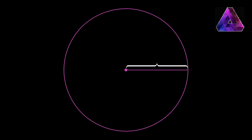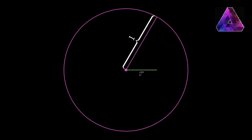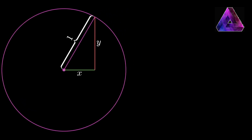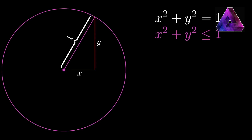So now let's back up again and think about this from a math perspective. Inside that circle, we have the relationship of the Pythagorean theorem. So in this triangle, we have x squared plus y squared equals 1. If x squared plus y squared is less than or equal to 1, those are points inside the circle. And if x squared plus y squared is greater than 1, that's outside of the circle.